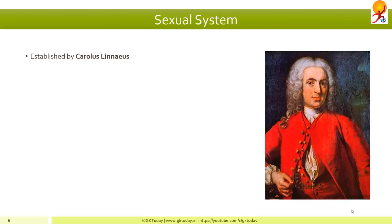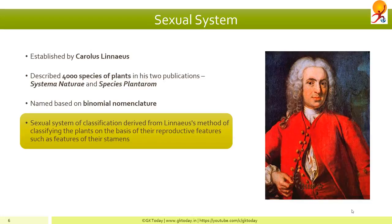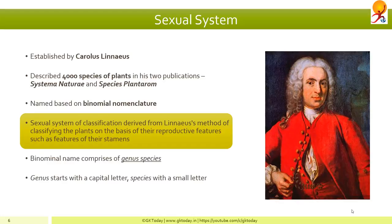Next, we come to the sexual system. Carolus Linnaeus, who is generally referred to as the father of taxonomy, published Systema Naturae and Species Plantarum in the mid-1750s, which described around 4,000 species based on the binomial nomenclature. He classified plants and animals on the basis of reproductive features of the plants, such as features of their stamens, which is why it's known as the sexual system of classification. Binomial names comprise a genus name and a species name — genus always starts with a capital letter, species with a small letter. For example, for humans: Homo sapiens.